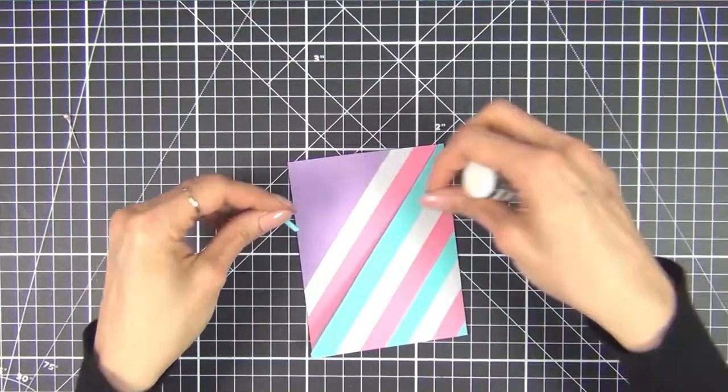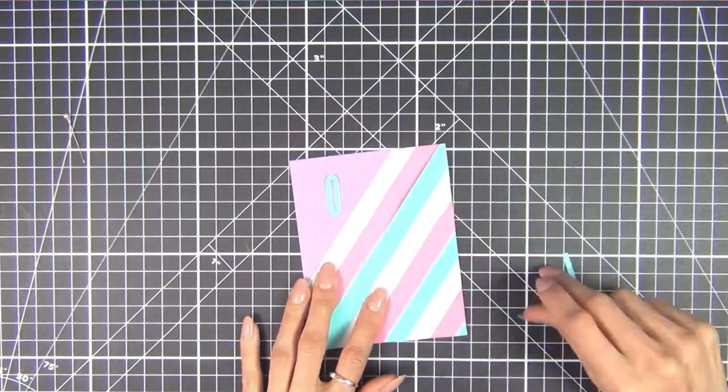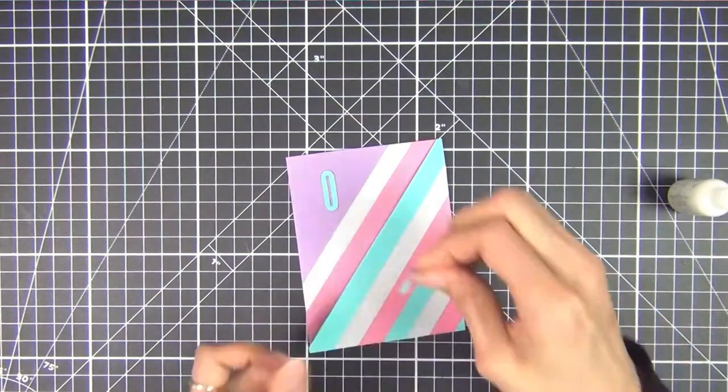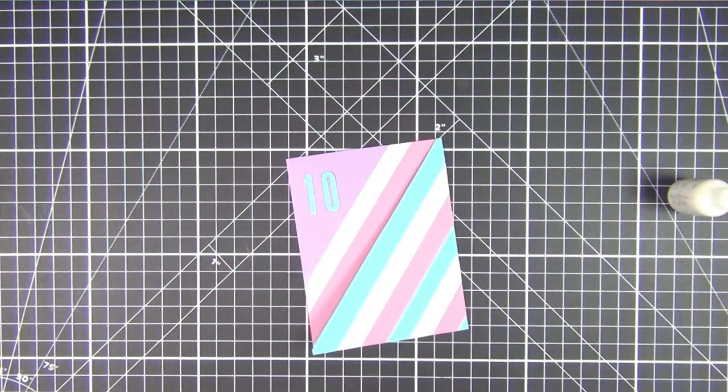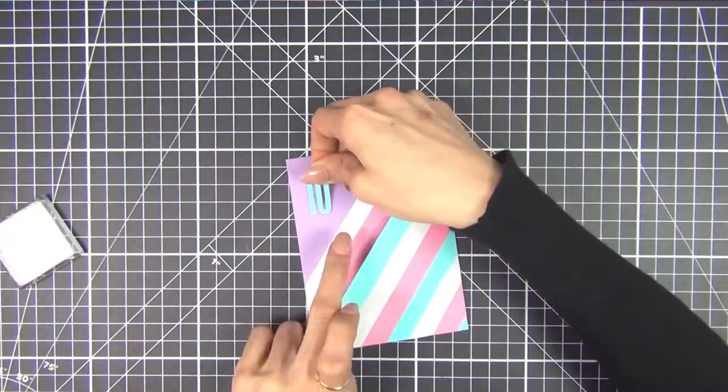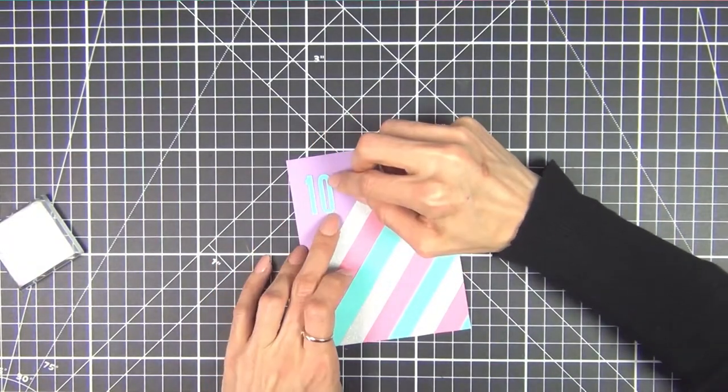I got these dies from my Tim Holtz sidekick bundle, but if you don't have these number stickers or stamps would also look great. I stuck these down using multi-medium matte adhesive and placed the card under some acrylic blocks while it dries.